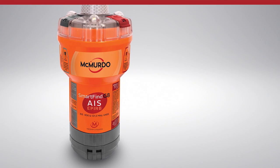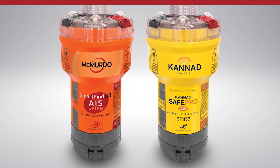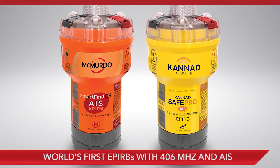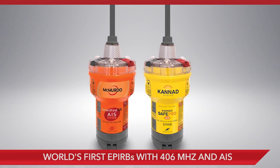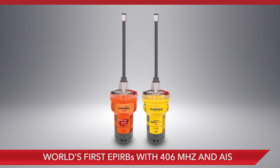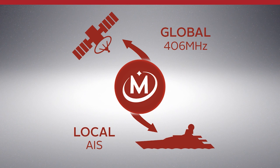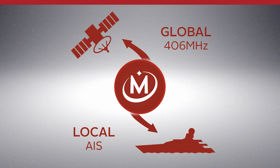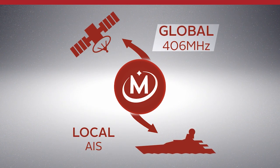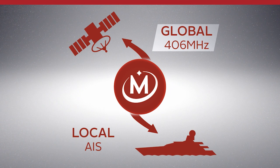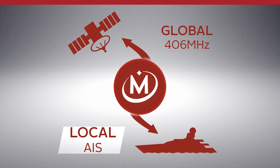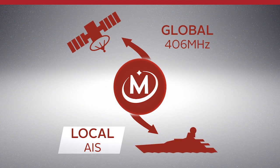The SmartFind G8 AIS and Canad SafePro AIS are the world's first EPIRBs to include both 406 MHz and AIS in a single beacon. This powerful convergence of frequencies in a single EPIRB maximizes the rescue process by combining the global alert and location of 406 MHz with the localized alert and rescue capabilities of AIS.